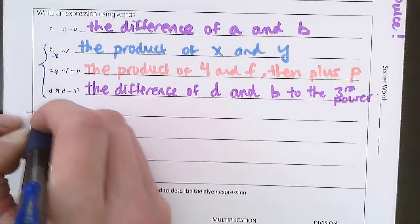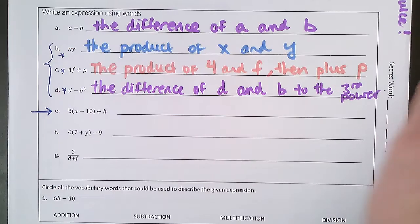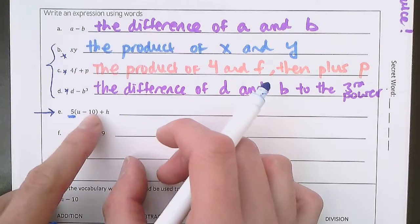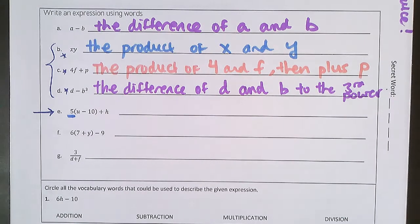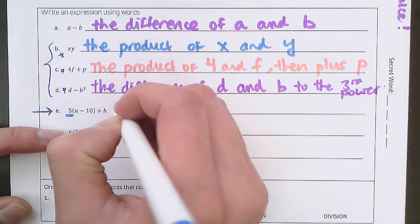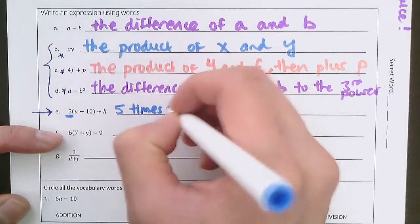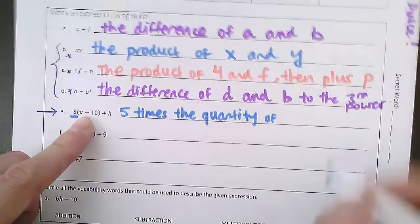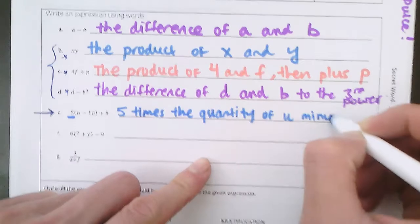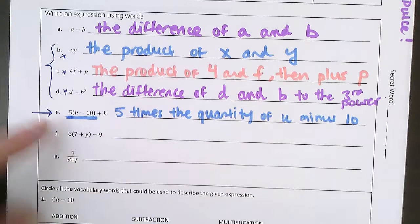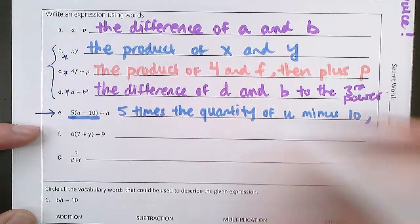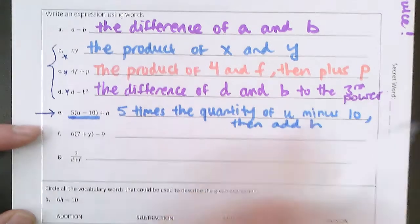Now let's take a look at e, because e is a little bit trickier. First we have 5 on the outside of this parenthesis, which means it's 5 times everything inside the parenthesis. Whenever you see parentheses, you can always think the word quantity — quantity and parentheses always go together. So here we have 5 times the quantity of u minus 10. And then after that, we're adding h. So: 5 times the quantity of u minus 10, then add h.